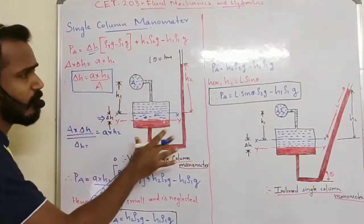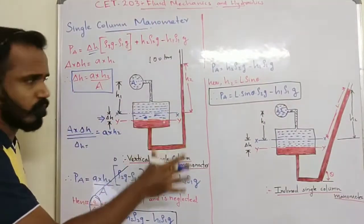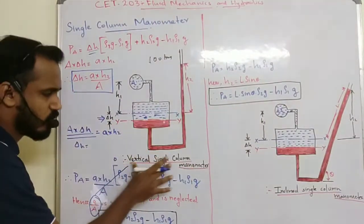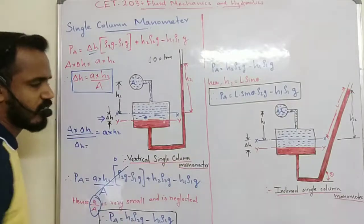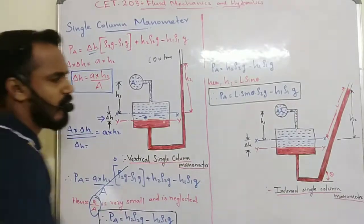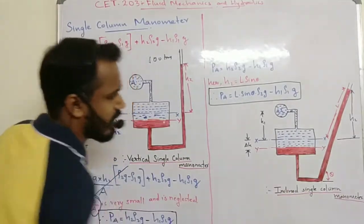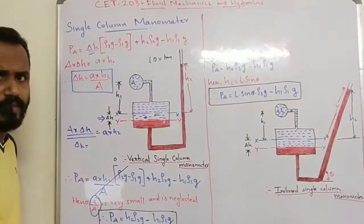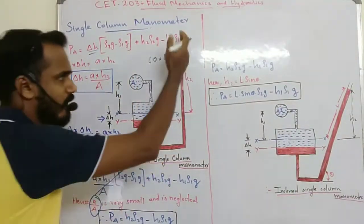The single column manometer is of two types: the first is the vertical single column manometer, and the second is the inclined single column manometer.